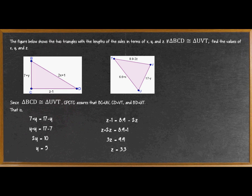Combining Z plus 2Z gives us 3Z, and adding 8.9 plus 1 gives us 9.9. Dividing both sides by 3, we end up having Z equals 3.3.